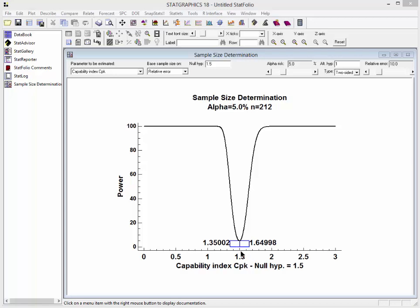At the bottom of the graph, it draws the confidence interval I would get if my estimate came in at exactly 1.5. In that case, the confidence interval would range from 1.35 to 1.65.